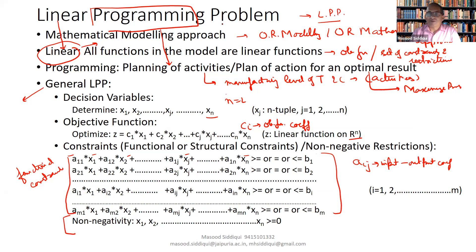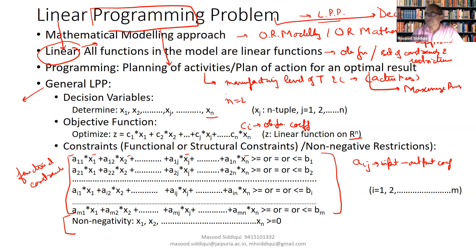Let me again explain the concept related to the linear programming problem. In short, this is known as LPP — this is a mathematical modeling approach, it is actually the OR modeling approach. There are two terms: one is linear, the other is programming. Problem is just related to decision making. Linear means all functions in the model — whether the objective function or all the constraints — are linear in nature, where the decision variables are of degree one only. Programming is related to the planning of activities, or plan of action, so that we get an optimal result.